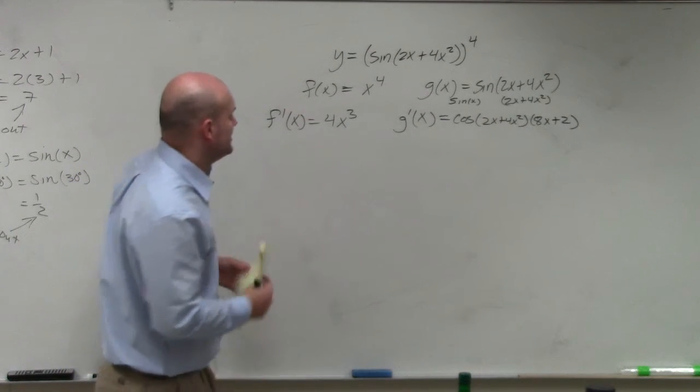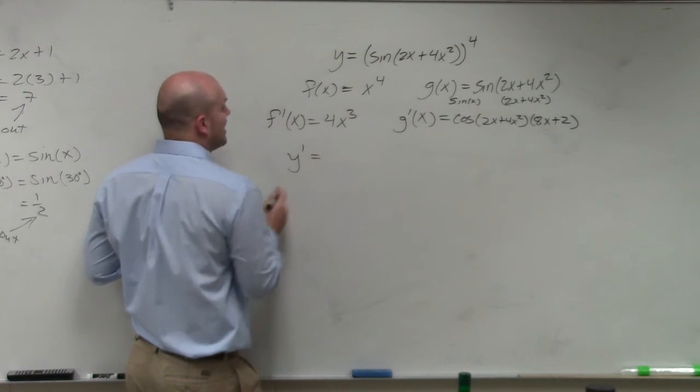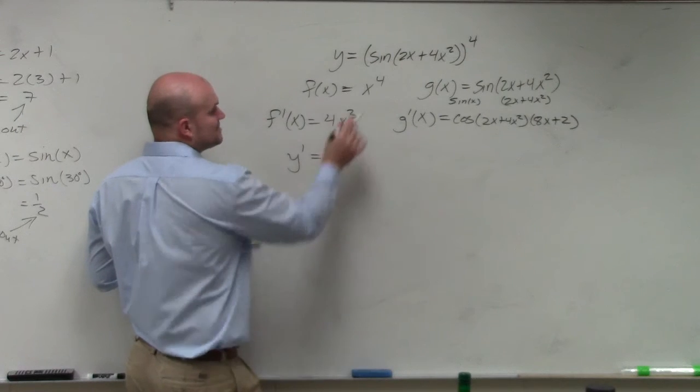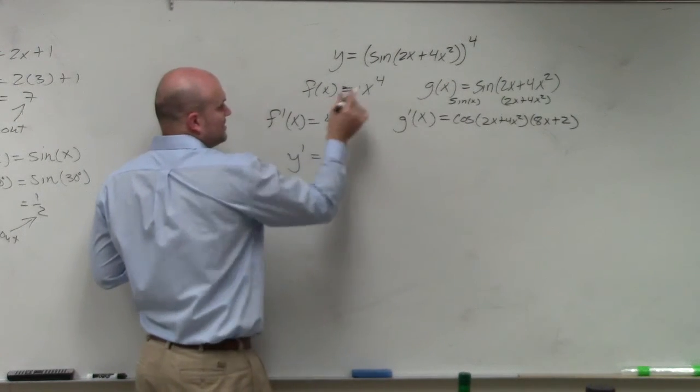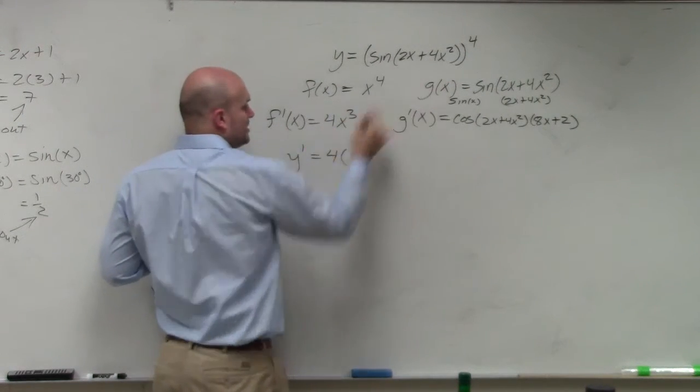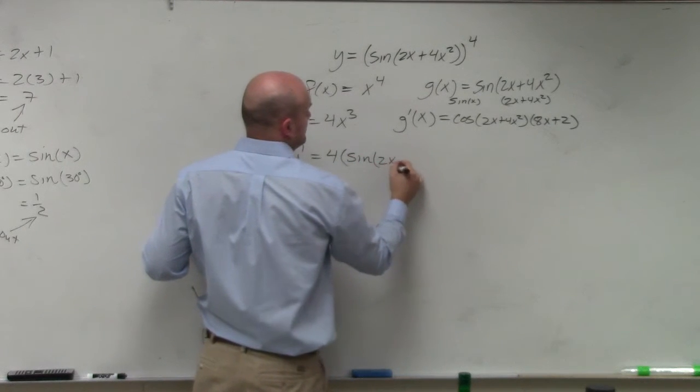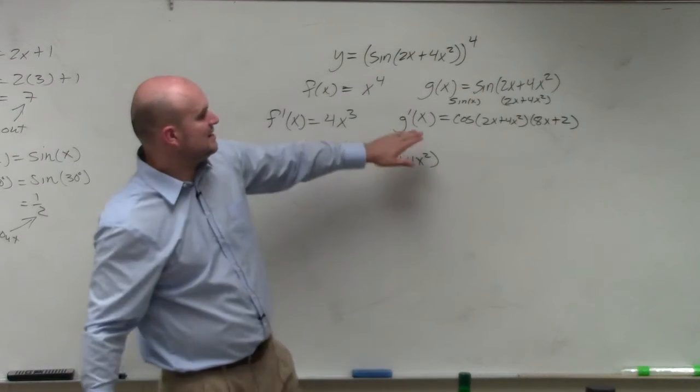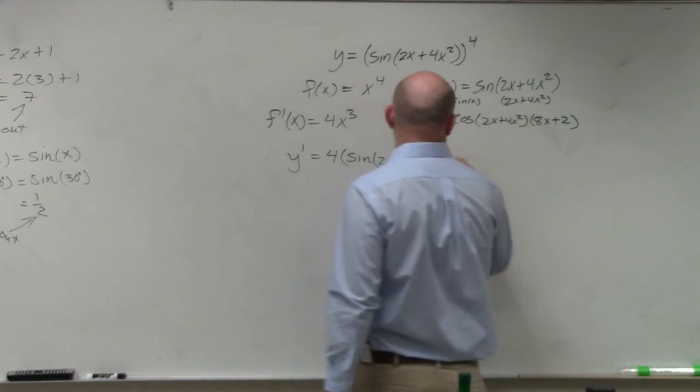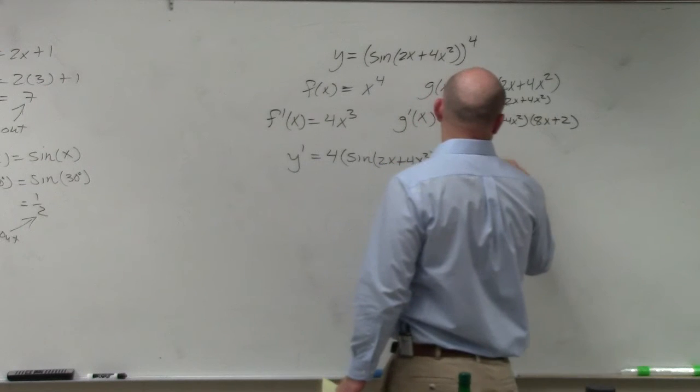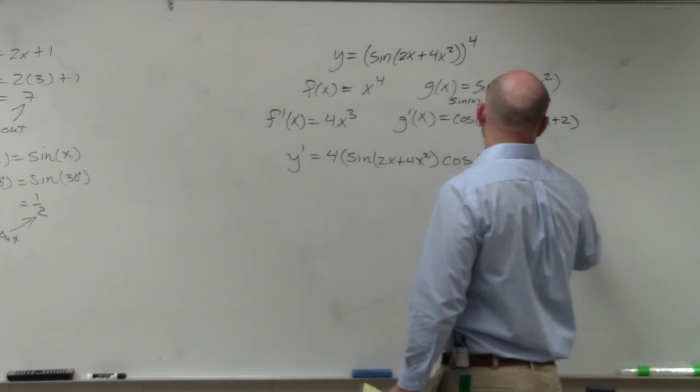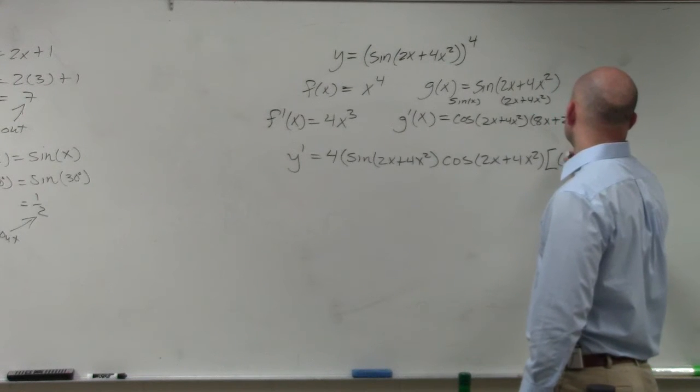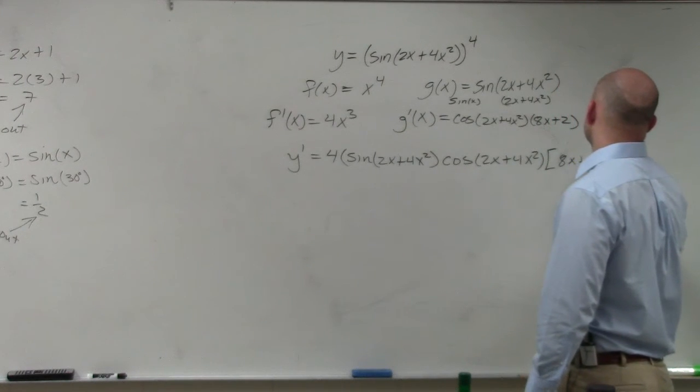Now, simply to find my prime of my function, I'll just take my 4 times my g of x. So take my derivative of my outside function, plug in my inside function, and then multiply that times the derivative, which is cosine of 2x plus 4x squared, and then times 8x plus 2.